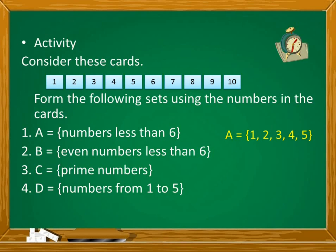For number 2, set B is equal to a set with elements 2 and 4. These are the even numbers less than 6. Number 3, C is equal to 2, 3, 5, and 7.